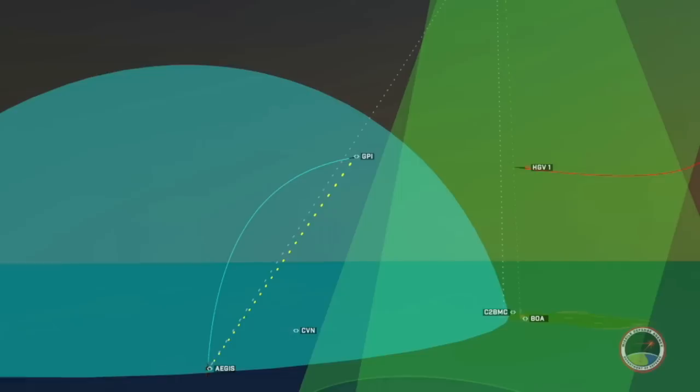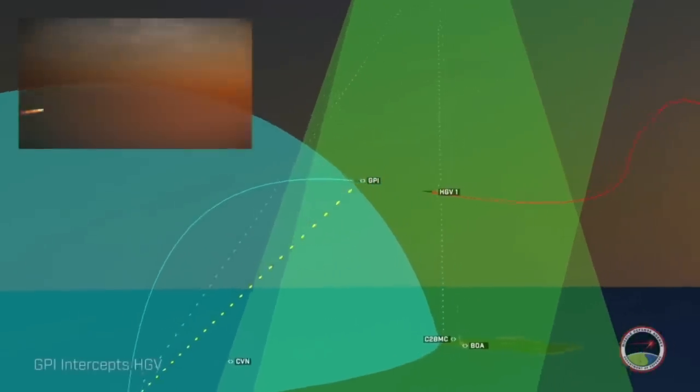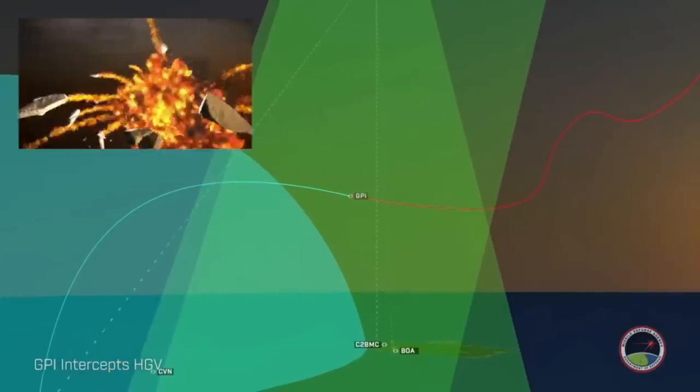As the Aegis Radar is out of the range of the hypersonic glide vehicle, the GPI obtains tracking data from the HBTSS relayed through the Aegis. The GPI intercepts the hypersonic glide vehicle during the glide phase.